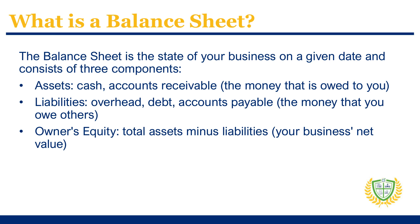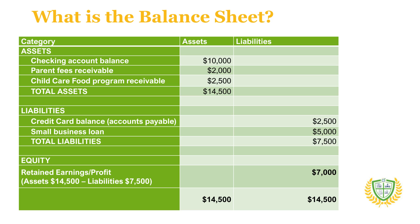Where the profit and loss shows the performance of the business over a period of time such as a year, quarter, or month, the balance sheet focuses on the state of your business on a given date. The balance sheet has three components: assets — cash, accounts receivable, or the money that is owed to you; liabilities — overhead, debt, accounts payable, or the money that you owe others; and owner's equity — total assets minus liabilities, or your net value. The balance sheet gets its name from being in balance: specifically, the owner's equity equals the total assets minus liabilities.